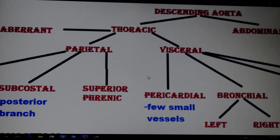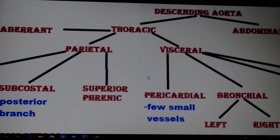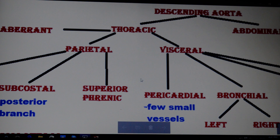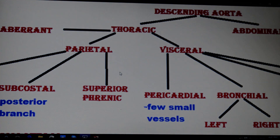The thoracic aorta is divided into three main parts: aberrant, parietal, and visceral. Aberrant is somewhat different in that it may or may not be present in some people. When present, it is mainly found on the right side of the thoracic aorta near the right bronchial artery, and it may also form anastomoses with the right intercostals.